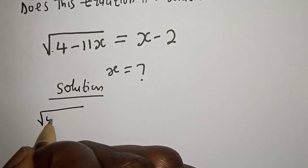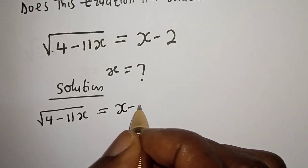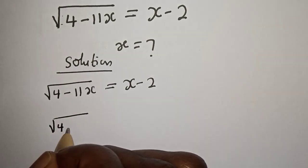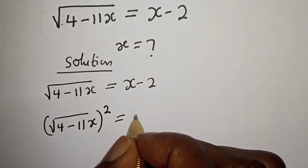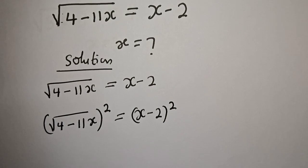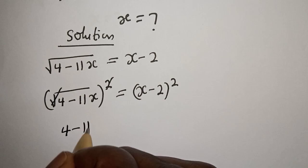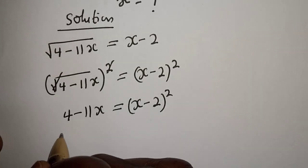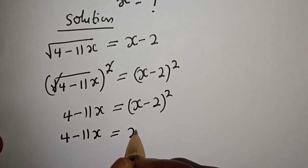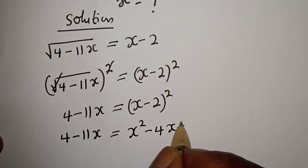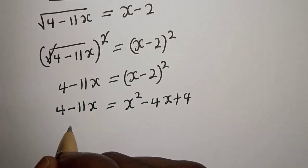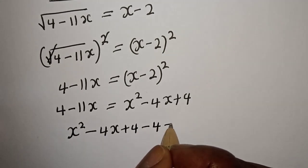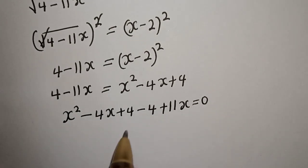Square root of 4 minus 11x is equal to x minus 2. Now let's square both sides of this equation in order to remove the radicals. That is, square root of (4 minus 11x) squared is equal to (x minus 2) squared. This cancels, giving 4 minus 11x is equal to x squared minus 4x plus 4. Now let's equate everything to zero: x squared minus 4x plus 4 minus 4 plus 11x is equal to 0.